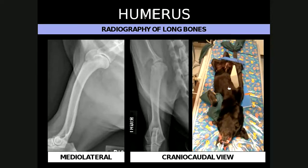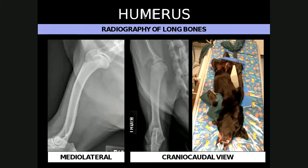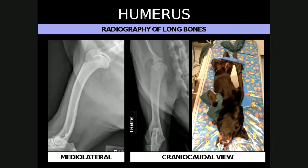For the craniocaudal view of the humerus, the patient is placed in dorsal recumbency. The affected limb is pulled cranially to try to get the humerus as parallel as possible to the cassette, and the thorax is rotated slightly away from the limb so that there's no superimposition of the thoracic wall with the humerus. The centering point is the midshaft of the humerus. The choice of craniocaudal versus craniocaudal view relates to ease of patient positioning and radiation safety, as some positions require hand-holding whereas others can use sandbags.